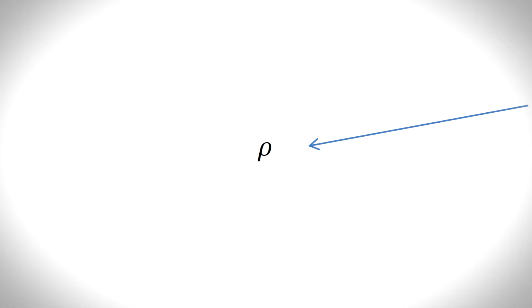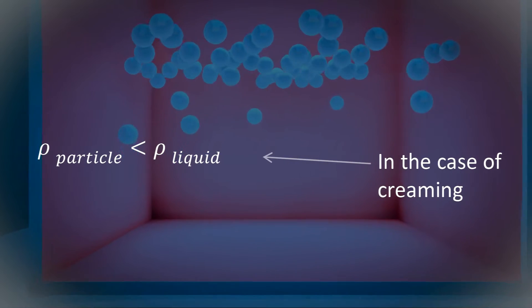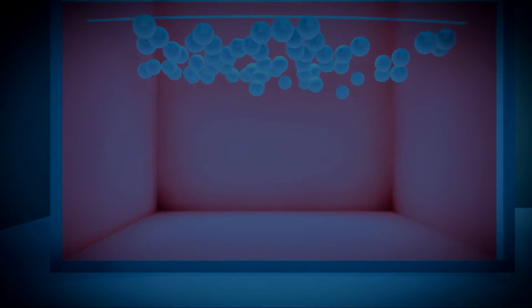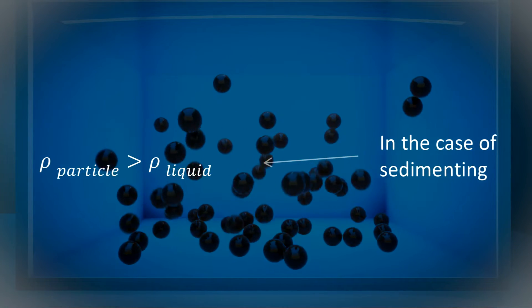Density is denoted by the Greek letter rho. If the density of the particles is less than the density of the liquid they are suspended in, the particles rise, or cream. If the density of the liquid is less than the density of the particles, then the particles sink, or sediment.